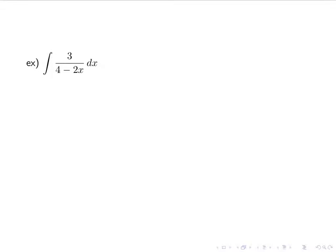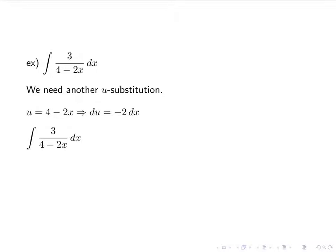Let's look at another example: the integral of 3 over (4 minus 2x) dx. We need another u-substitution. We let u equal 4 minus 2x, which is the denominator. When we differentiate, we get du equals negative 2 dx — don't forget about the negative. After u-substitution, our integral becomes negative 3 halves times the integral of 1 over u du, since we divide by negative 2 and keep the original 3. We integrate to get negative 3 halves ln of the absolute value of u plus c, then substitute back: negative 3 halves ln of the absolute value of (4 minus 2x) plus c.